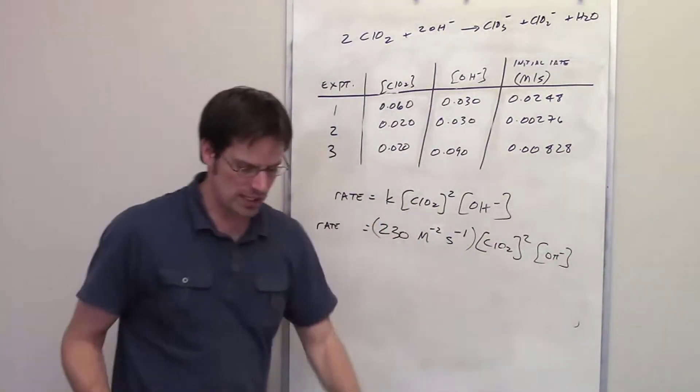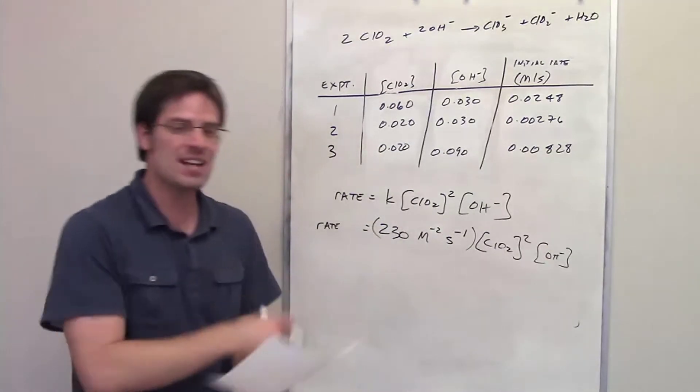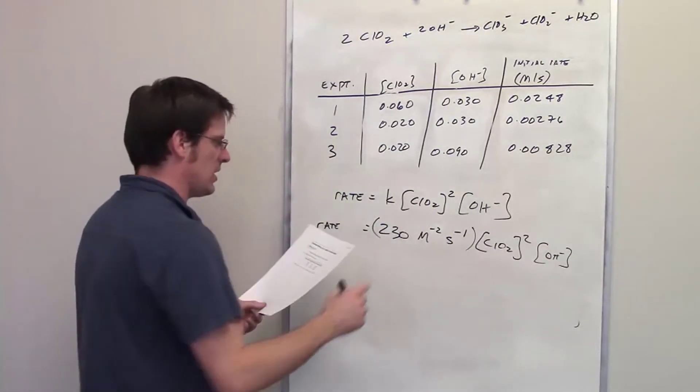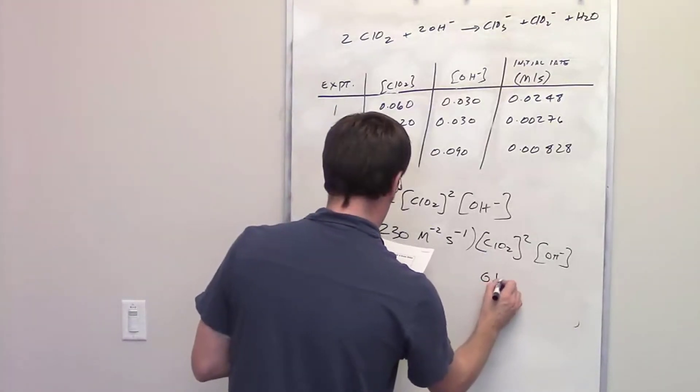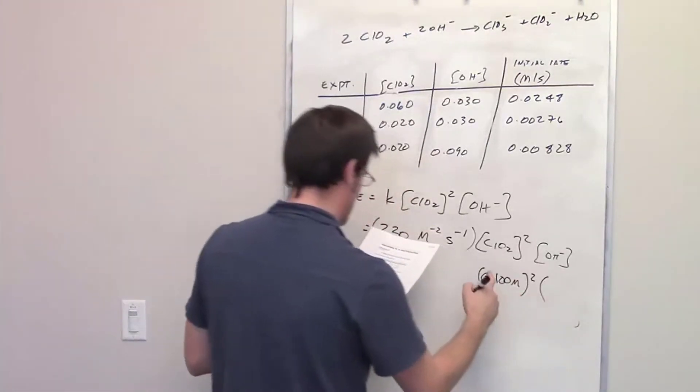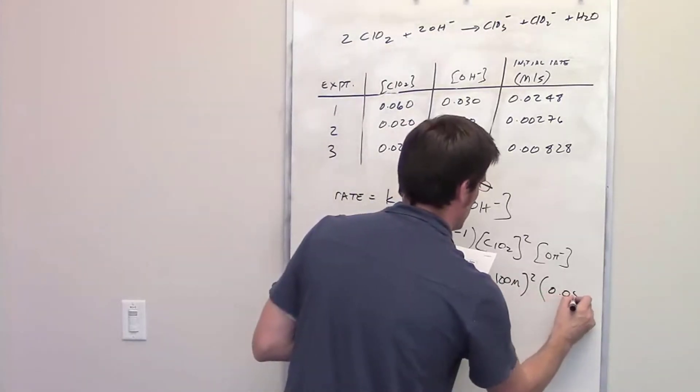So, in this question it tells me, or asks me what the rate is when the concentration of chlorine dioxide is equal to 0.1 molar and the concentration of hydroxide is equal to 0.05 molar.